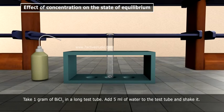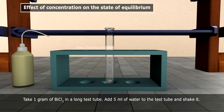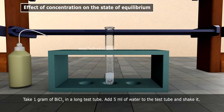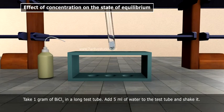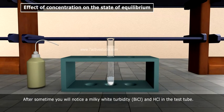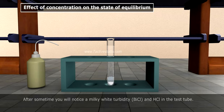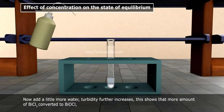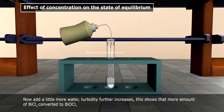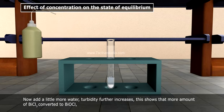Take 1 gram of BiCl3 in a long test tube, add 5 ml of water to the test tube and shake it. After some time, you will notice a milky white turbidity BiOCl and HCl in the test tube. Now add a little more water, turbidity further increases.